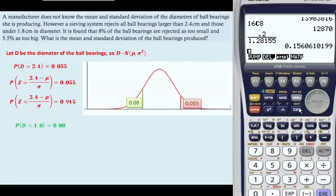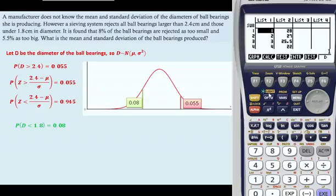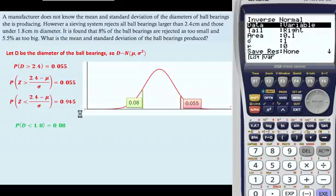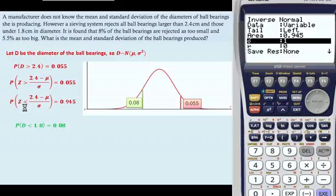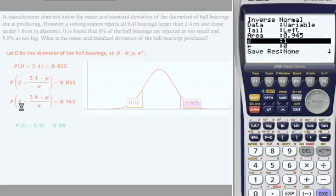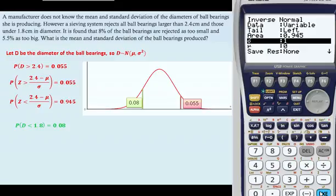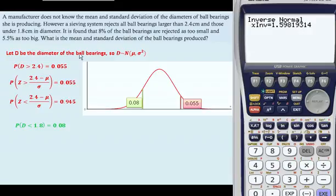We can then go back to the stats page and do a distribution, normal and an inverse of 0.945. So we want a left here, because this is below this value now. And the area is 0.945. And sigma is 1 and mu is 0, because we're dealing with Z. And when we hit enter, we get a value of 1.59819314.